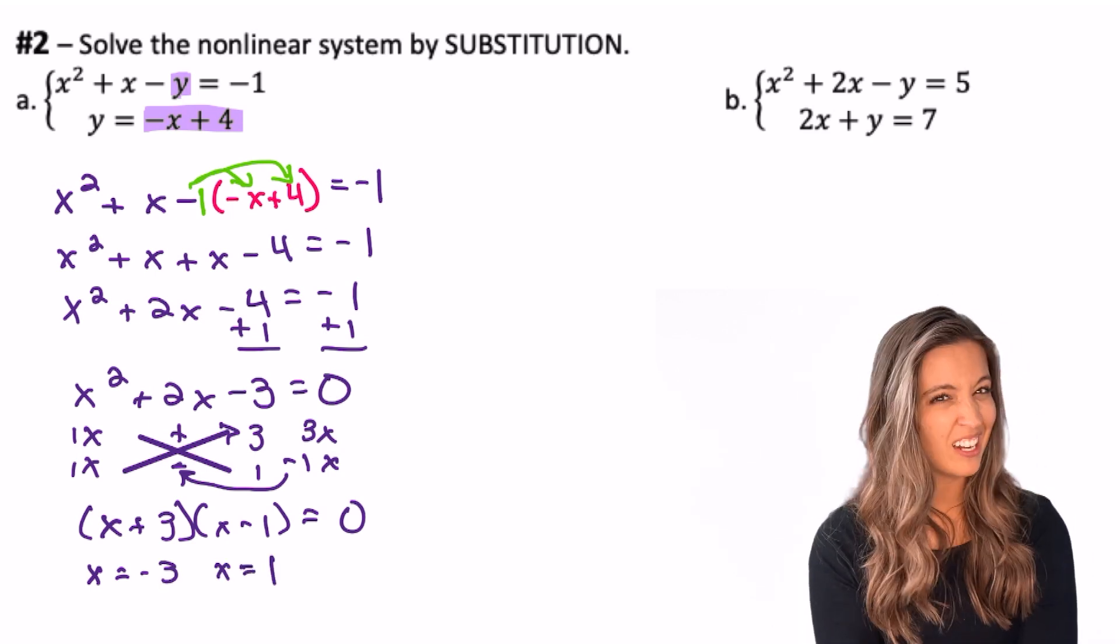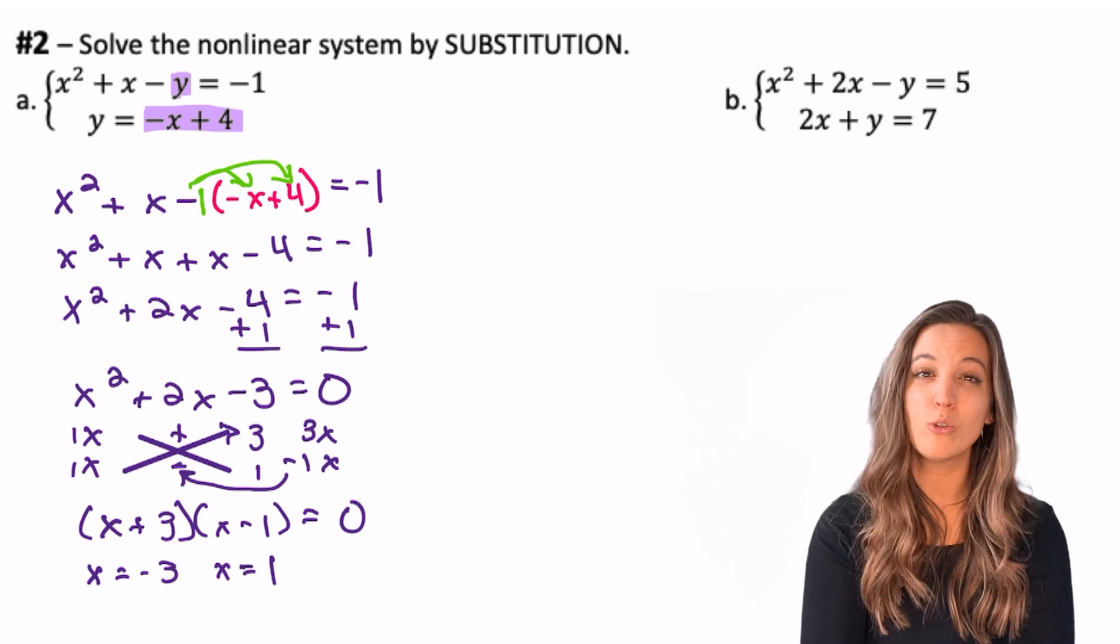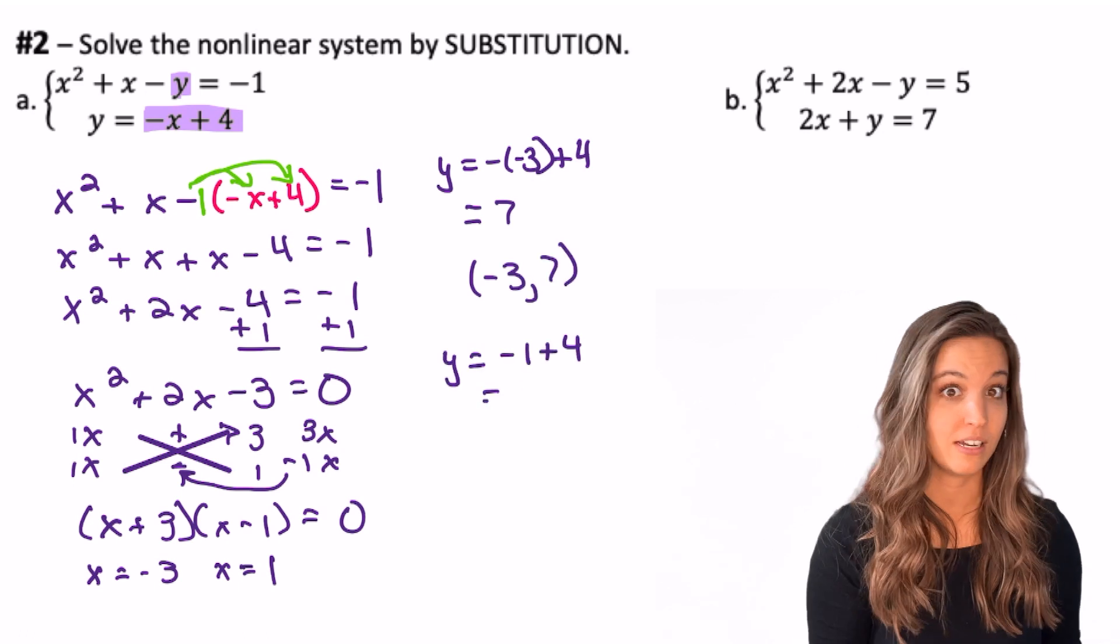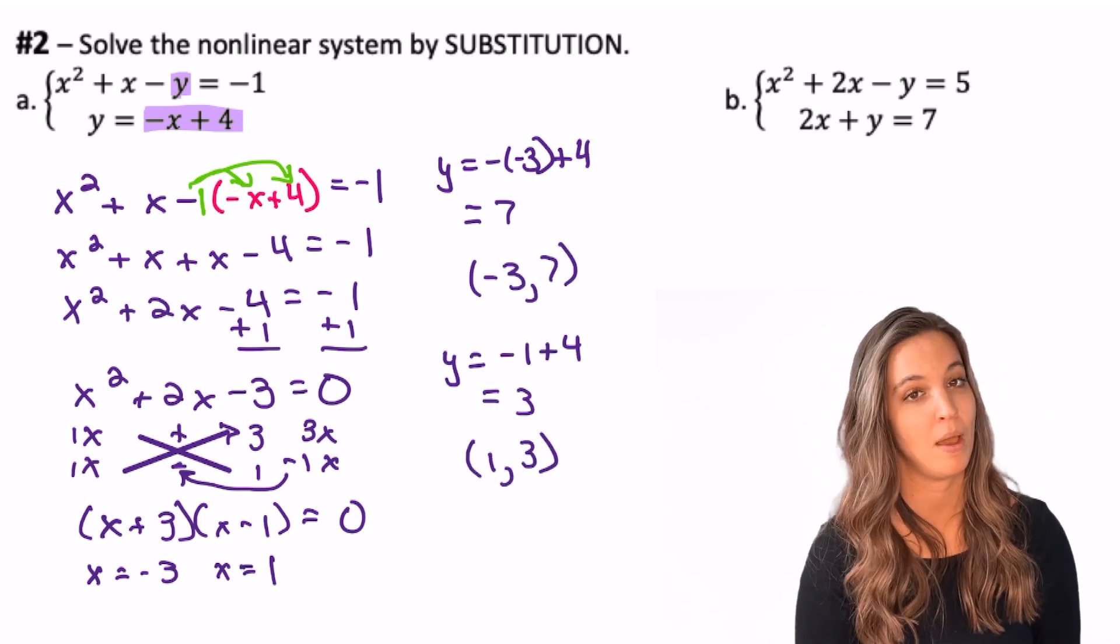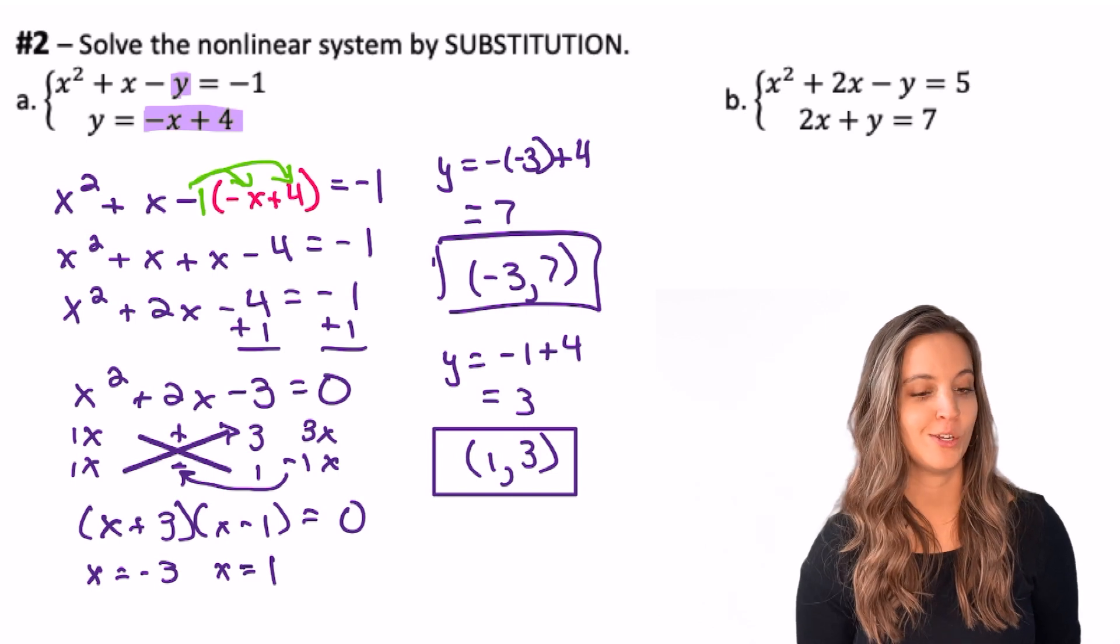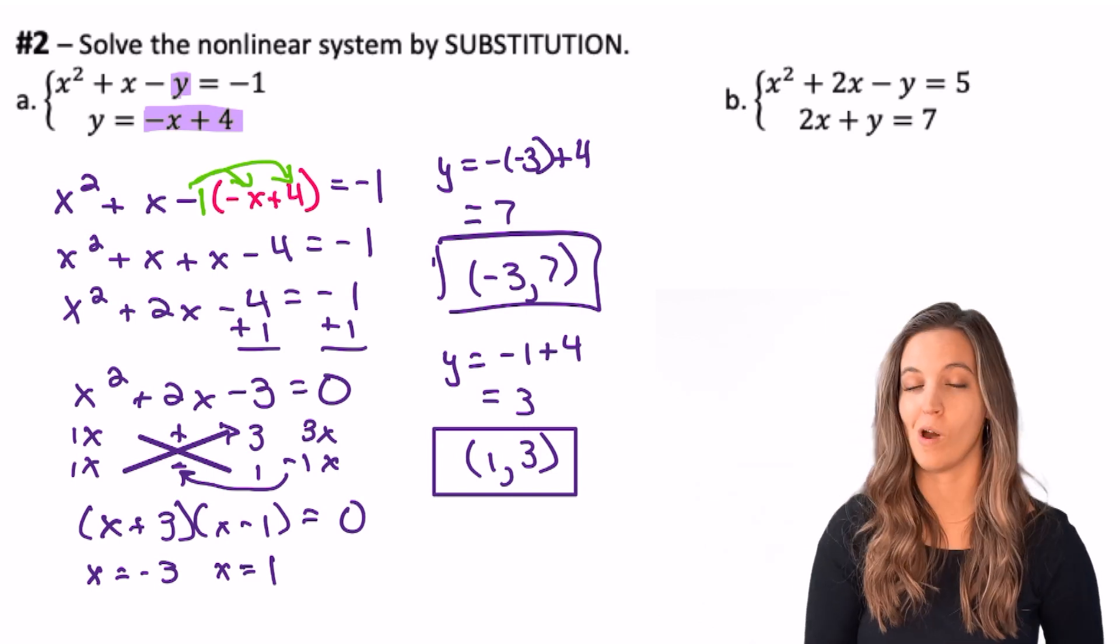But is that a solution to a nonlinear system? No, those would be the intersection points. So I need to plug x back in as negative 3 and positive 1 to get my y values. My two real solutions to this nonlinear system are negative 3, 7 and 1, 3.